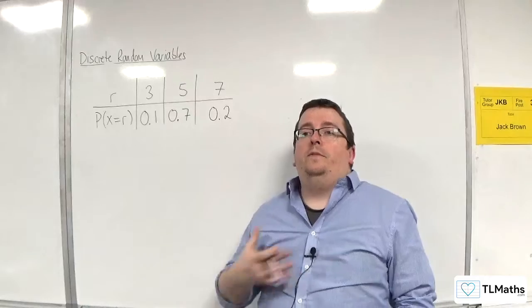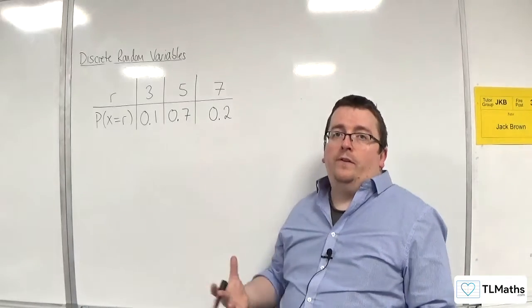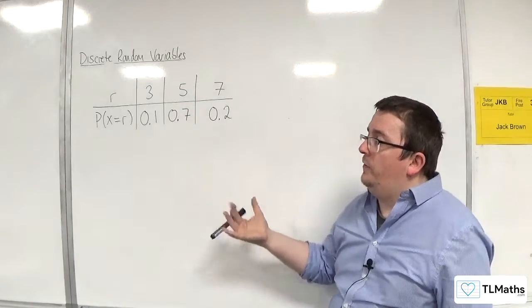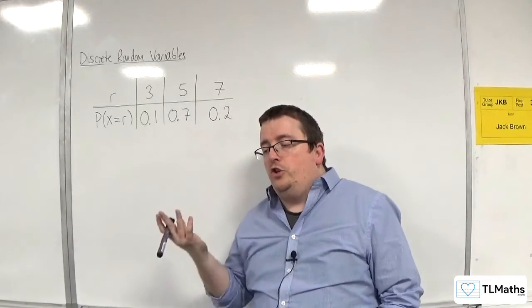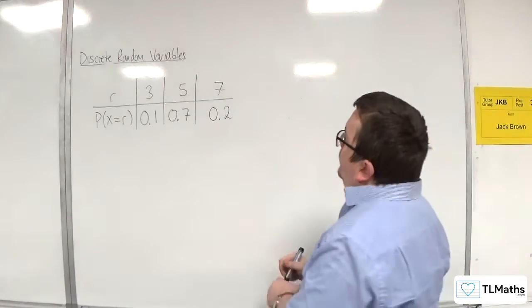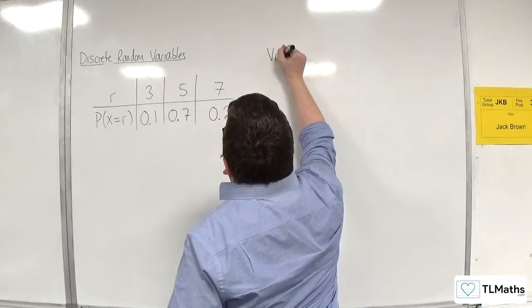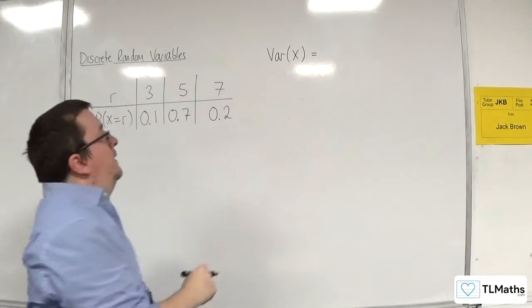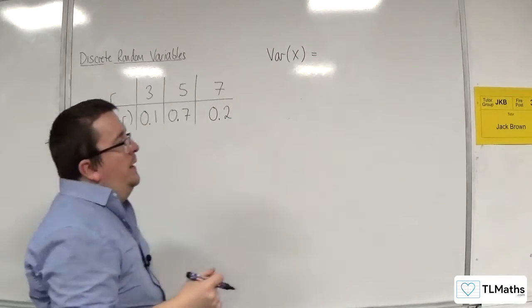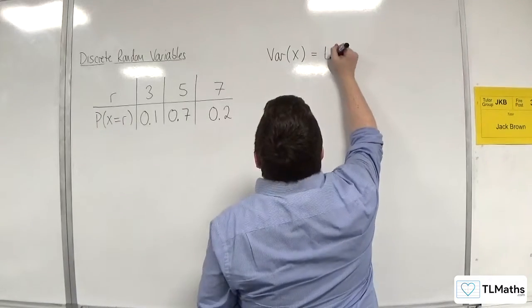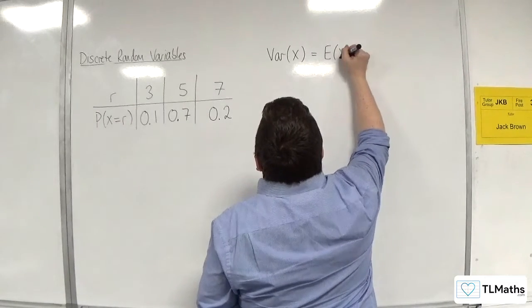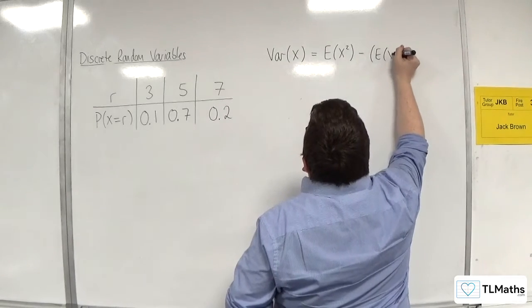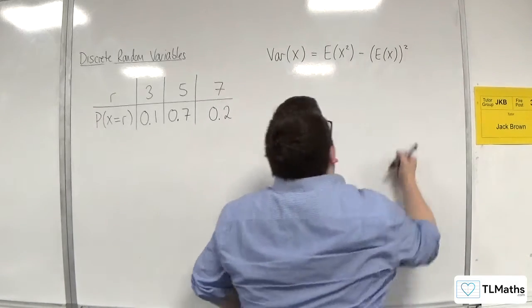If you do that, you can derive this process here. So, instead of frequencies, we've got probabilities. And what you can show is that the variance of X, so we write that as Var(X), is equal to the expected value of X squared, take away the expected value of X, all squared.